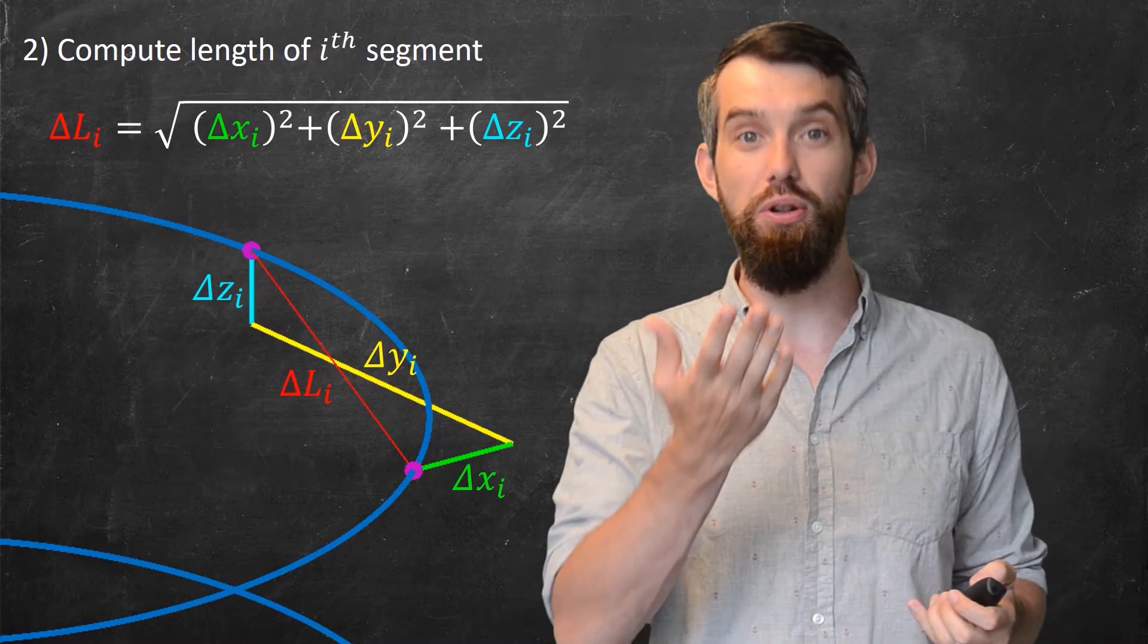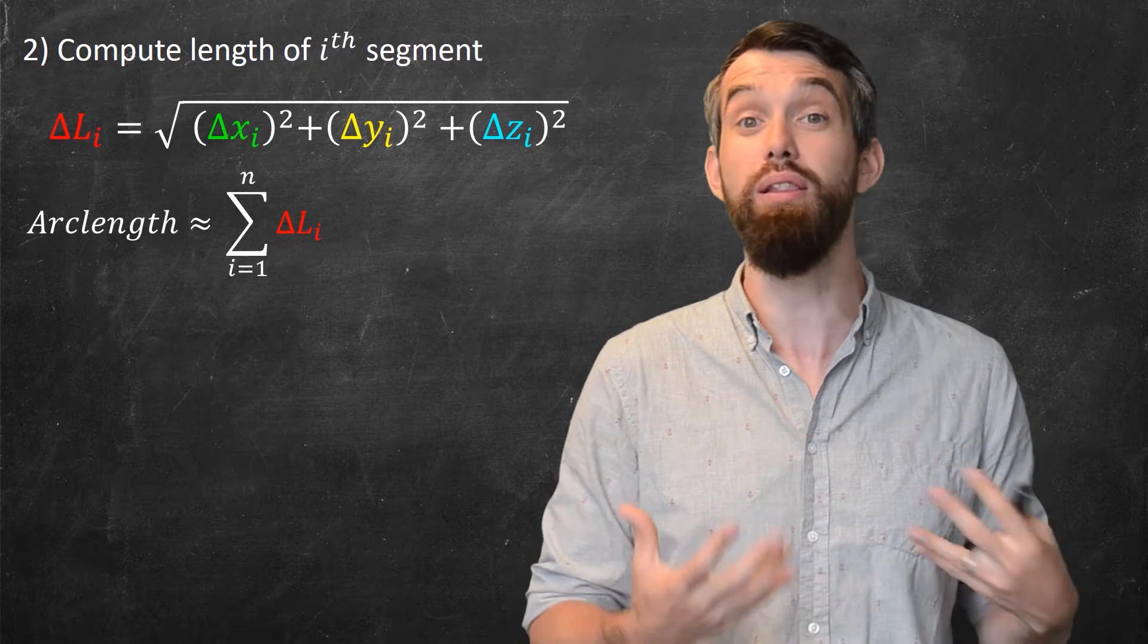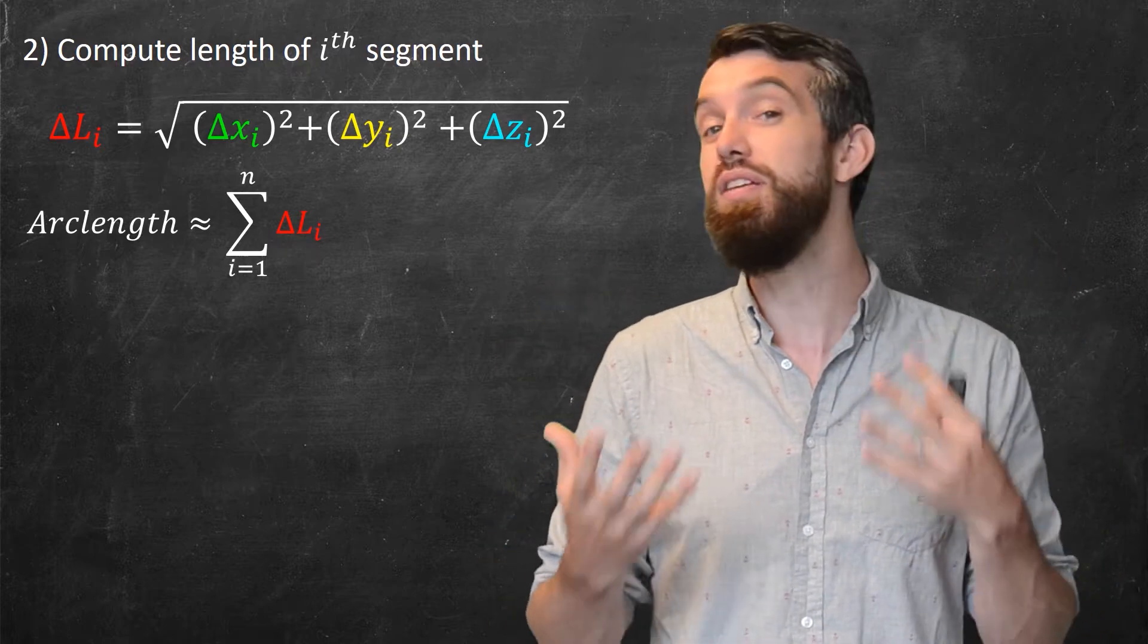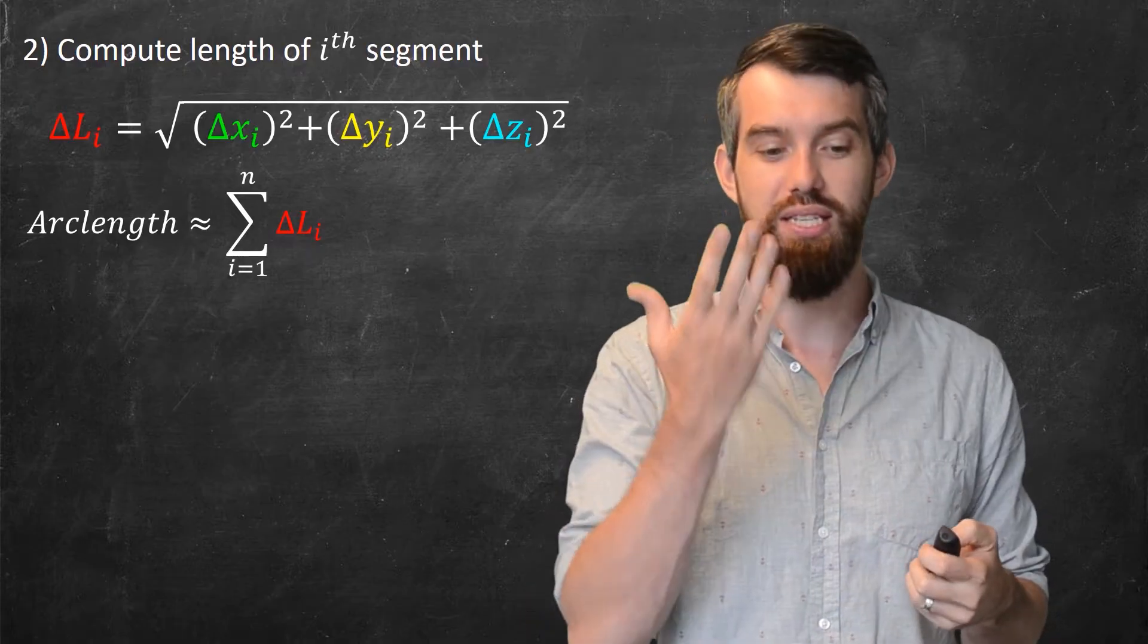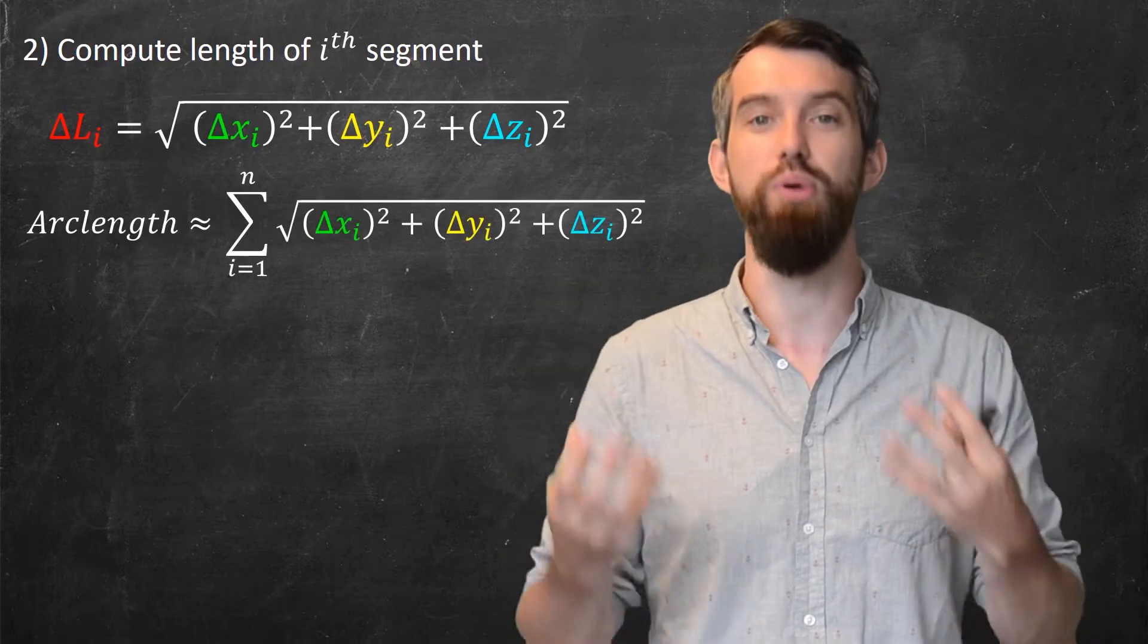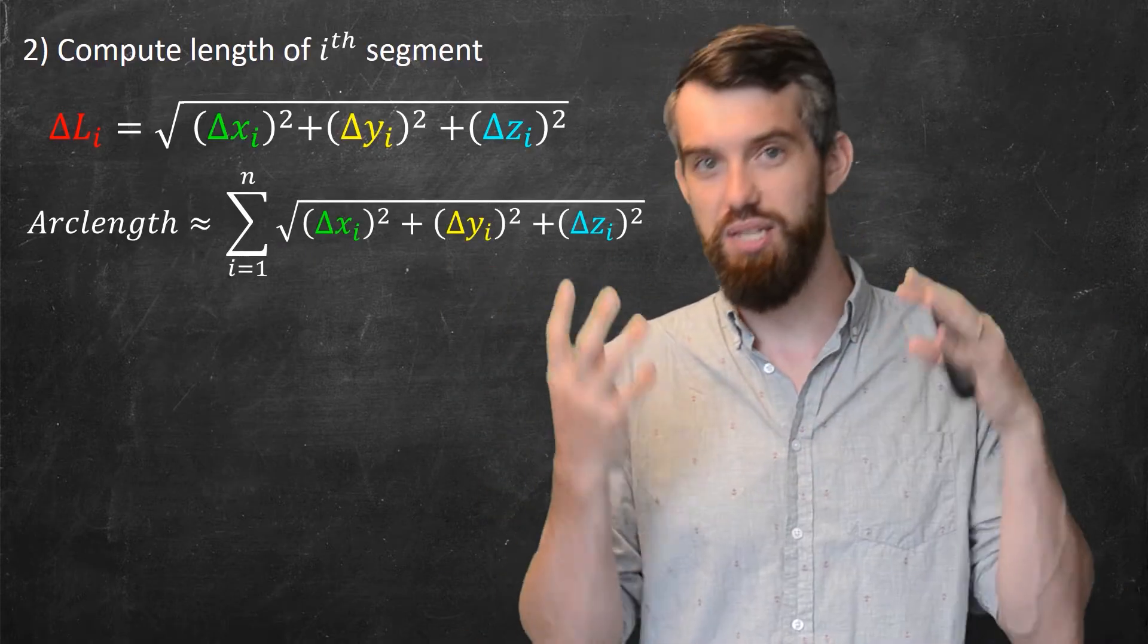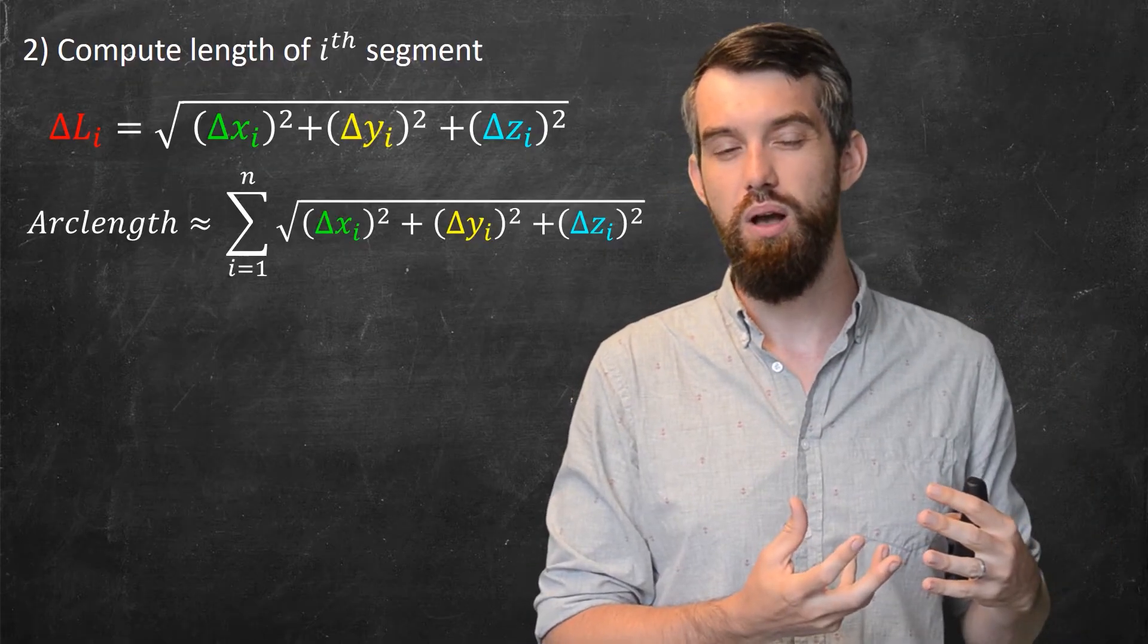And now let's put them all together. So going back to our original computation where we said arc length was the sum of these little line segments. Well, now I know what the delta Li is. So it is the sum of the square root of the delta xi squared plus the delta yi squared plus the delta zi squared.